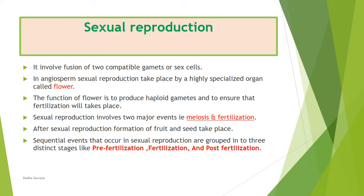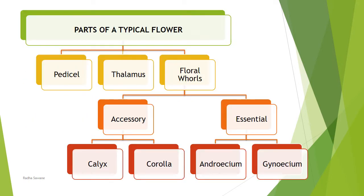To understand how sexual reproduction takes place, we should first know the structure of a flower. A flower is a highly modified and condensed shoot specially designed for sexual reproduction. So we start here with the flower.